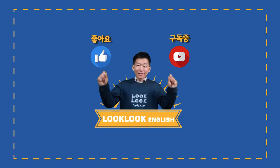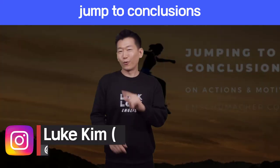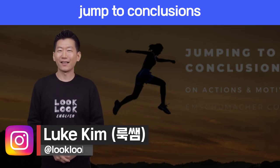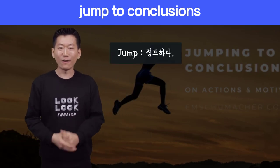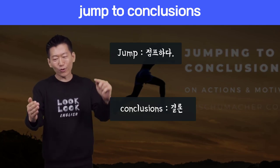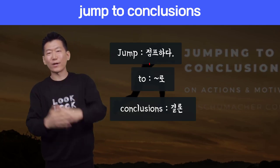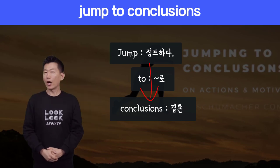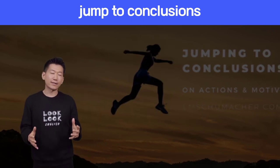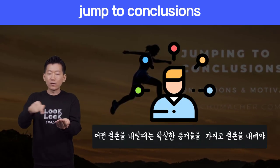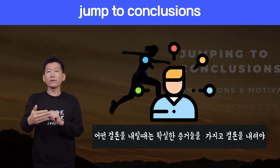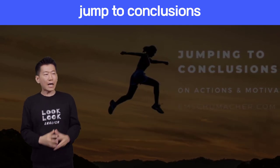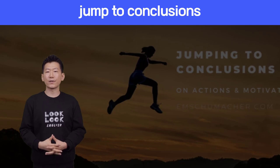오늘 준비한 표현은 'Jump to conclusions'입니다. Jump는 점프 하는 것이고, conclusions로 바로 점프를 하는 것, 즉 결론으로 바로 가는 것을 생각하시면 돼요. 우리가 어떤 결론을 내릴 때는 여러 가지 증거를 잡고 나서 결론을 내리는 거지, 하나만 보고 결론을 내리는 건 없는 거잖아요.